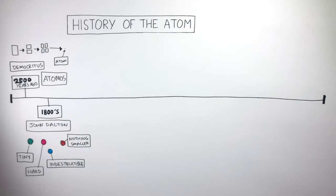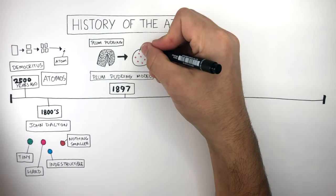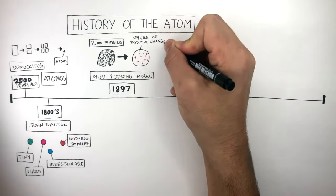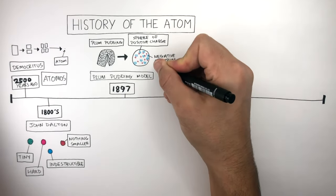In 1897 the plum pudding model was released by a man called JJ Thompson. JJ Thompson said the plum pudding, which is an English dessert traditionally served at Christmas where there are raisins embedded throughout a sponge, could be used to represent the structure of the atom. He said the atom consists of a sphere of positive charge where these blue circles represent the negative electrons embedded throughout.